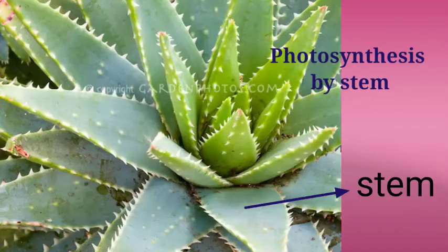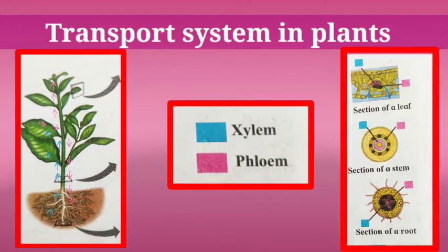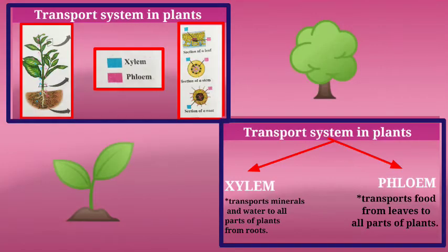In some plants like cactus, photosynthesis is performed by the stem, as the stem contains chlorophyll. An important point is the transport system in a plant's body. Just as blood vessels perform transport in the human body, xylem and phloem are the two main transport systems in plants. Xylem transports minerals, salts, and water to all aerial parts, while phloem transports food from leaves to all other parts of the plant.